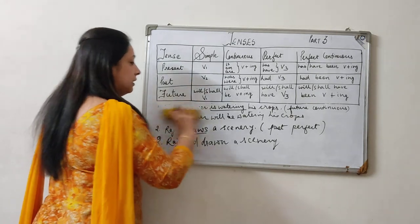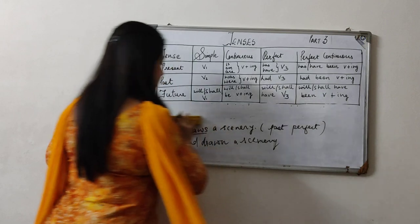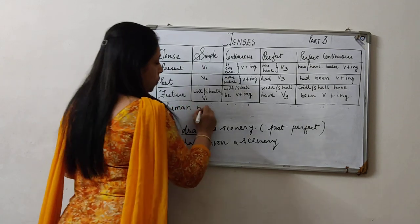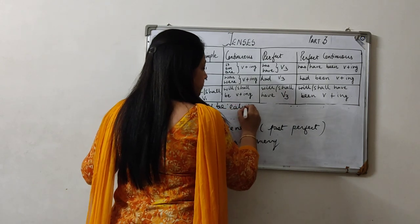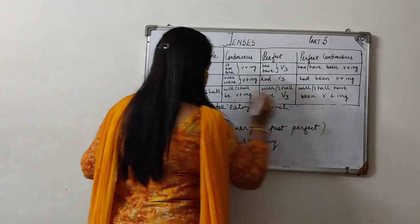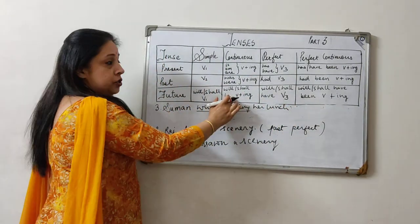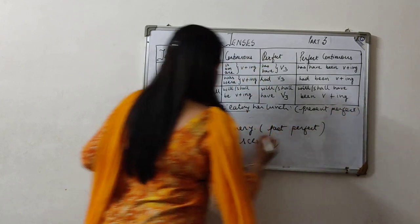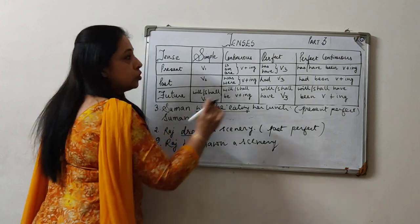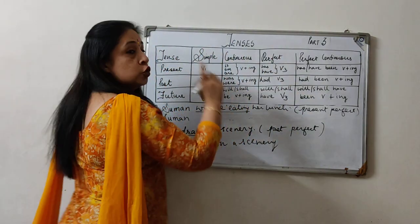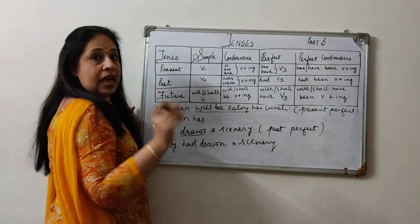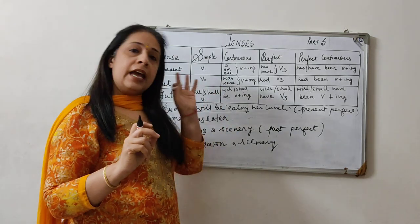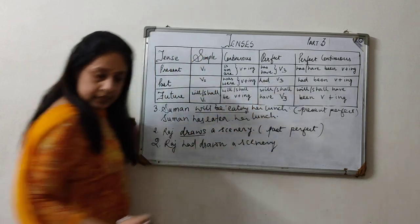We will keep discussing different types of conversions. Suppose the sentence is: 'Suman will be eating her lunch.' Which tense is this? 'Will be eating' — it is future continuous tense. And suppose we are told to make it present perfect. Suman is one single person, so we have 'has' and the verb third form. The three forms are eat, ate, eaten. So: 'Suman has eaten her lunch.'